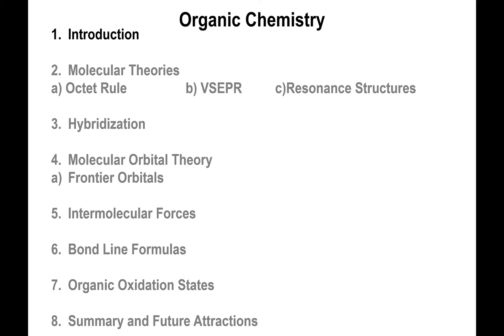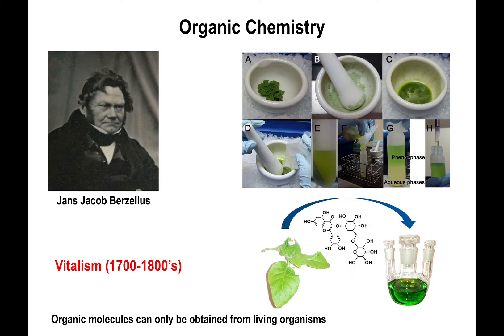Let's talk about organic chemistry. This is the first lecture, and let's begin by talking a little bit about the historical aspect of organic chemistry. Back in the 1700s-1800s, Jacob Berzelius came up with a proposition as to what organic chemistry was — simply that organic molecules could only be obtained from living organisms.